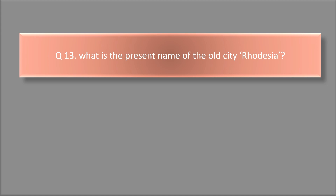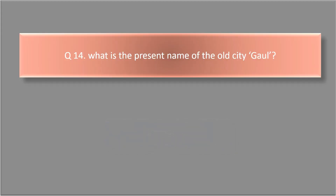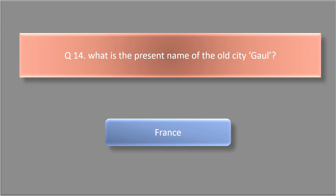What is the present name of the old city Rhodesia? The answer is Zimbabwe. What is the present name of the old city Gaul? The answer is France.